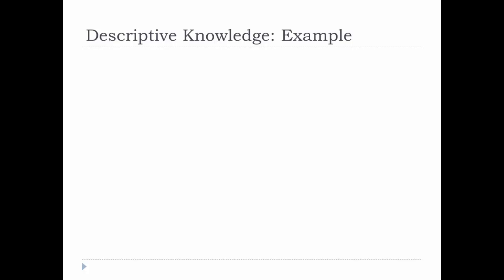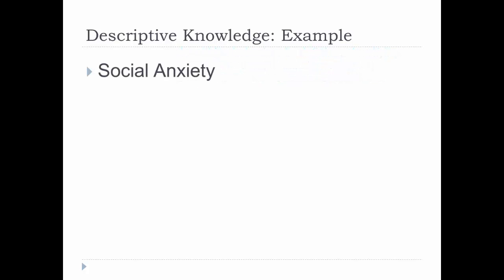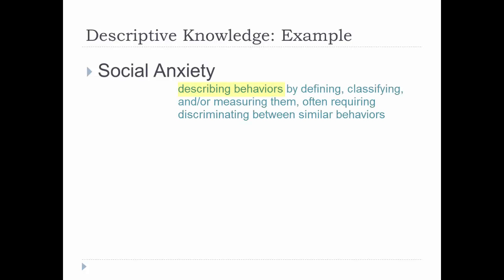Let's move away from the Disneyland example and take another look at descriptive knowledge, where some claim is where all knowledge starts. Remember that descriptive knowledge is describing behaviors by defining, classifying, and or measuring them, often requiring discriminating between similar behaviors. So let's use social anxiety as an example, a condition that, according to the Anxiety and Depression Association of America, affects about 7% of the population. This is an example of descriptive knowledge. We can quantitatively describe a behavior. But remember that we may need to delve deeper, to discriminate between similar behaviors.